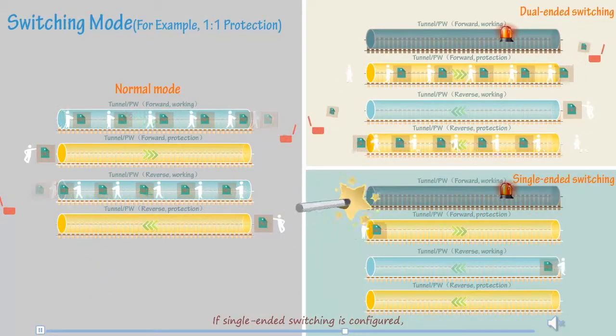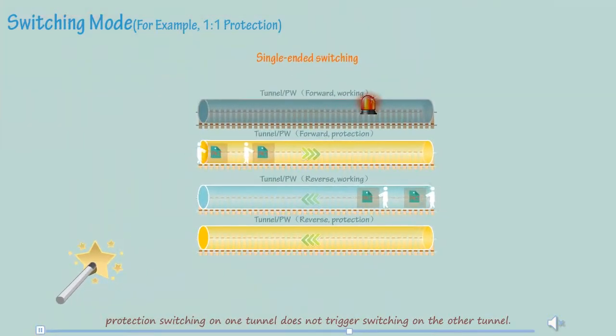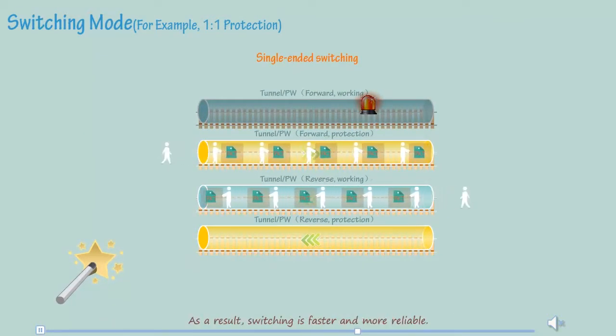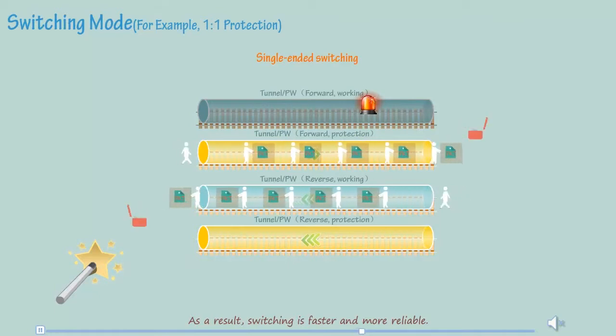If single-ended switching is configured, protection switching on one tunnel does not trigger switching on the other tunnel. As a result, switching is faster and more reliable.